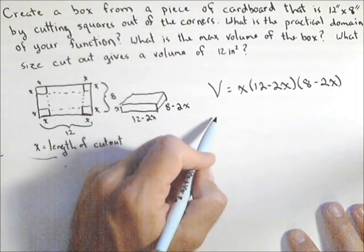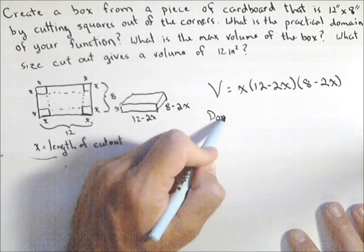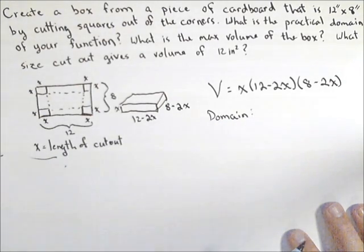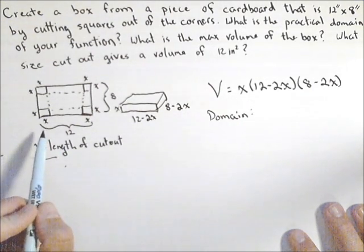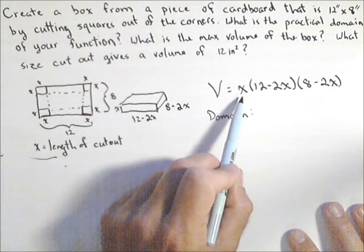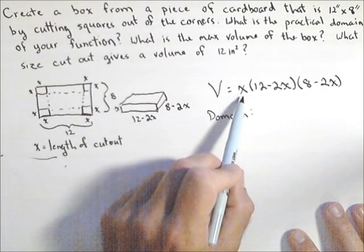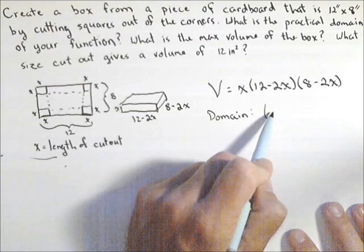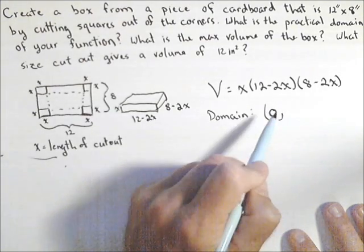Now the next thing that was asked for is a practical domain. Those are the values that make sense in the context of the problem. So first off, we don't want x to be negative. How could we have a negative cutout? Even a cutout of zero wouldn't give us a box, so the lower end of our domain has to be zero.